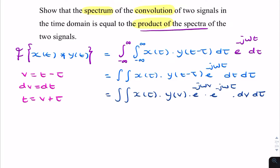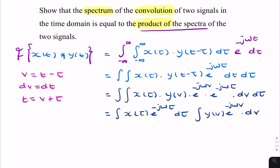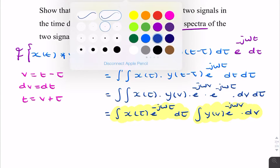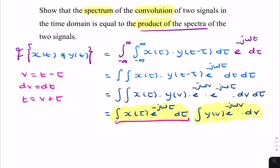We can further rearrange this as x(τ) e to the minus jωτ dτ times y(v) e to the minus jωv dv. If you look at each of these, they represent the definition of the Fourier transform — this is the Fourier transform of x(τ), and this is the Fourier transform of y(t).